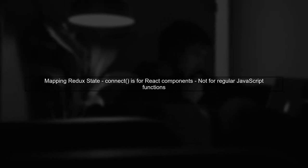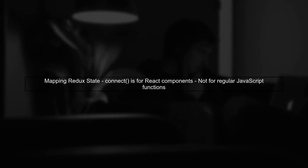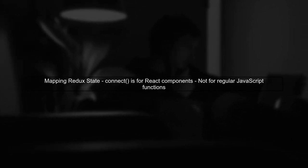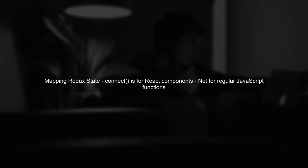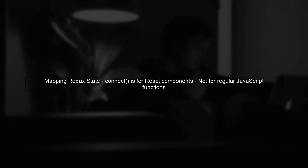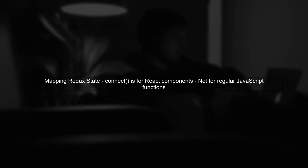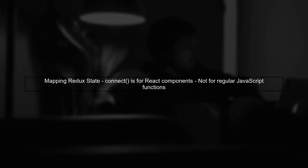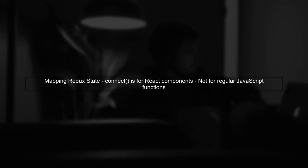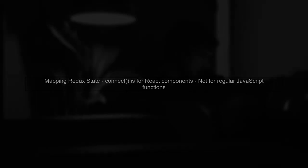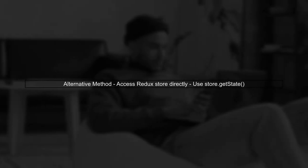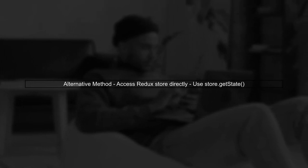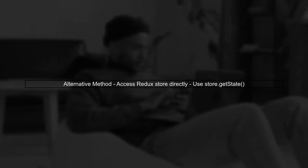To answer your question, it is not possible to directly map Redux state to a regular JavaScript function using the Connect function. The Connect function is specifically designed for React components. However, there are alternative methods to access Redux state within a regular JavaScript function.